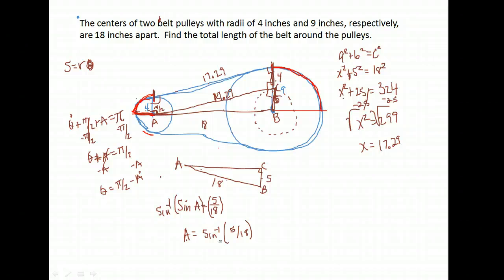We want a radian measure for our angle and not a degree measure. So we do the inverse sine of 5 over 18, which gives me 0.28 approximately. I'm going to round it off there.